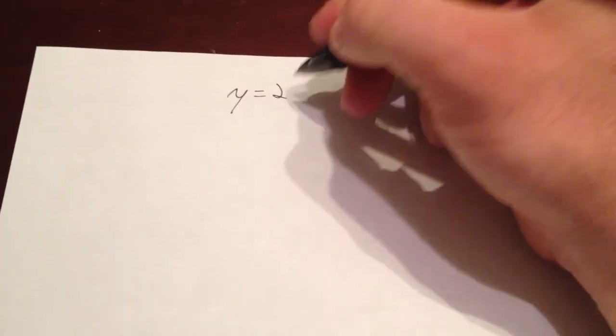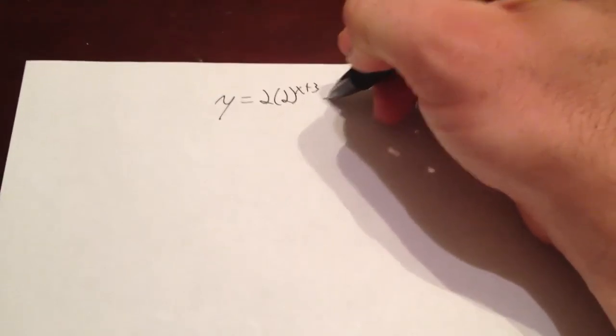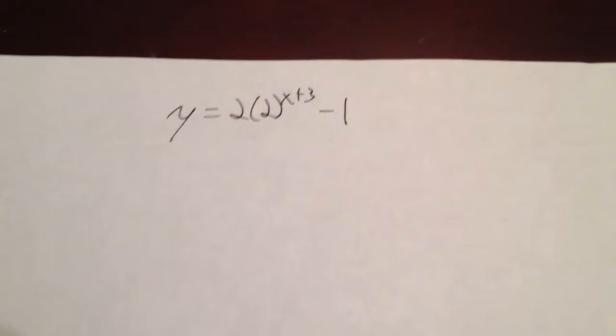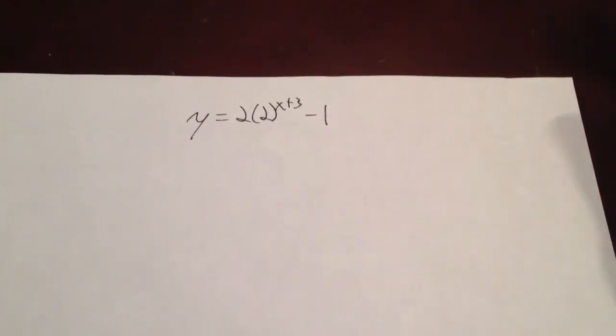Alright, so we're going to make a quick little video on graphing exponential growth and decay functions. I'm going to graph an exponential growth function, 2 times 2 to the x plus 3 minus 1, and that's going to be our function that we're graphing. This is exponential growth, but we're going to follow the same process if we were doing exponential decay.